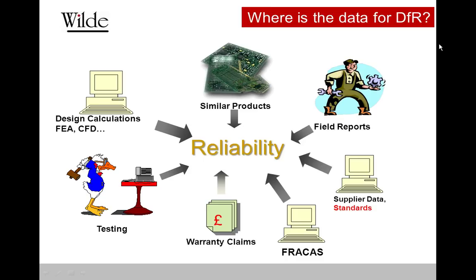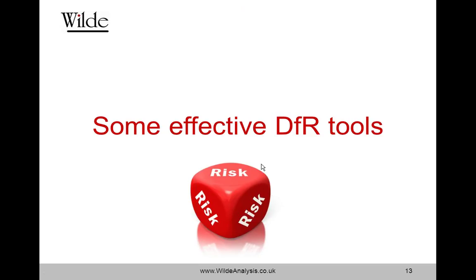A FRACAS system is an absolutely key requirement in all testing-class reliability organizations. Every company I've come across that's testing-class has a decent FRACAS system, even if that's just a spreadsheet. It's absolutely critical to capture this information — even just to discriminate and decide whether an issue is one you'll take forward. It's an important process for developing high reliability. We've also got warranty claims, testing, design calculations, simulation, finite element modelling, CFD, and what's happened with similar products. There is an awful lot of information spread throughout most organizations.